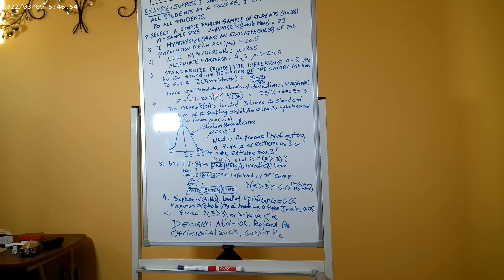As sample mean 21 minus 20.5 in parentheses in the numerator, divided by, in parentheses, my sigma population standard deviation is 1 divided by square root of 36. Which is 0.5 in the numerator divided by 1 over square root of 36 is 6.